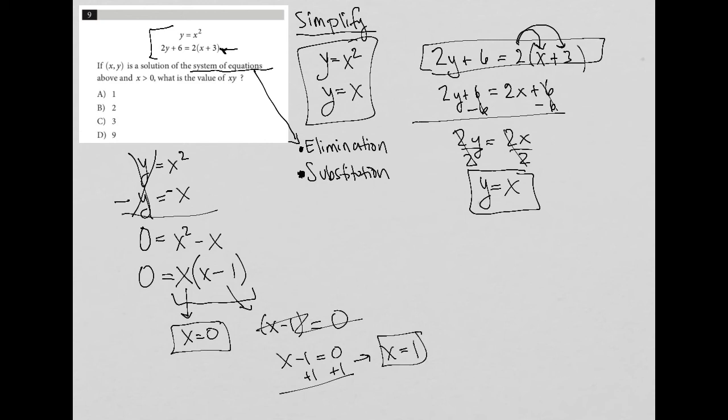Now the question tells us that x is greater than 0. So that means I'm crossing this out here. And that the only value for x based upon what we just solved, that works for this particular question is x equals 1.